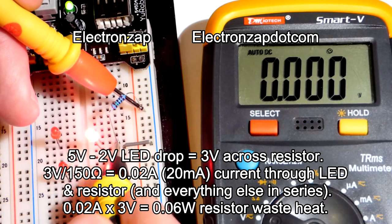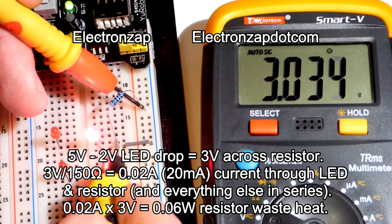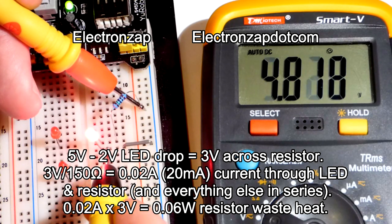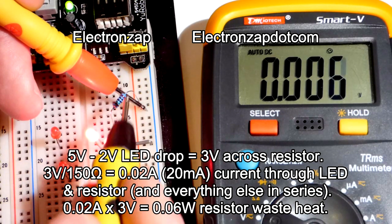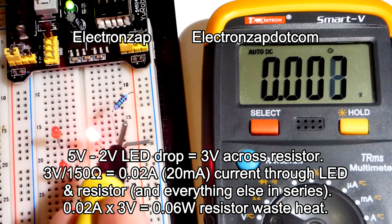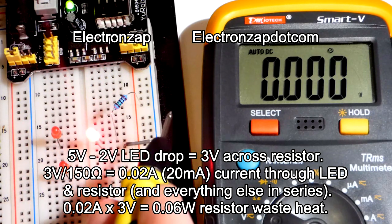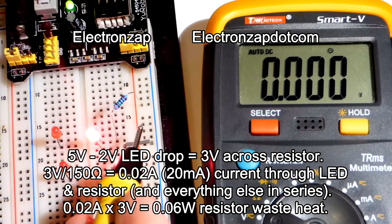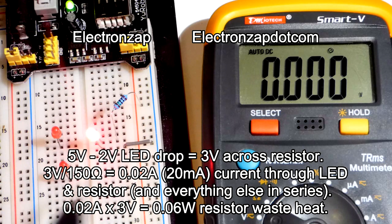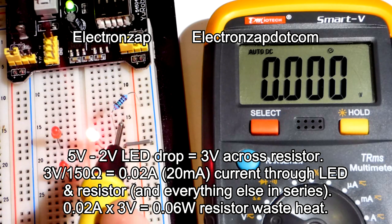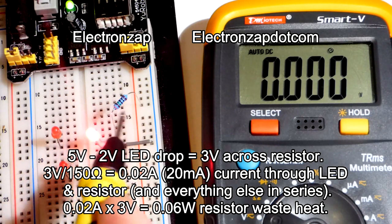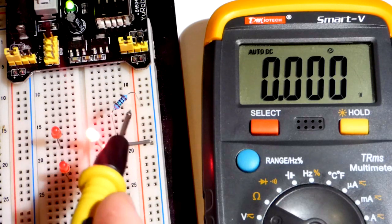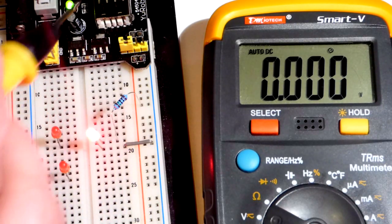So now we have 3 volts across this resistor. That's what's setting the current. The LED blocks about 2 volts, in this case. Otherwise it conducts freely after it blocks that voltage. So there's 3 volts across the resistor because it's a 5 volt power supply minus 2 volts from the LED, 3 volts. Simple math. And then, 3 volts divided by the 150 ohms of resistance is 0.02 amps, or 20 milliamps. That 20 milliamps, 0.02 amps, times 3 volts across the resistor is 0.06 watts. This is only 60 milliwatts of power this has to dissipate. That's because the voltage is low.